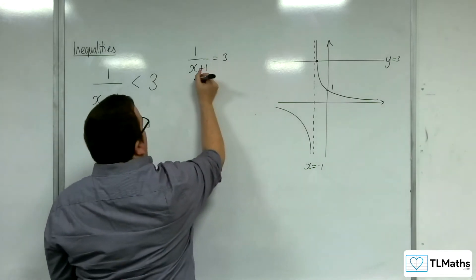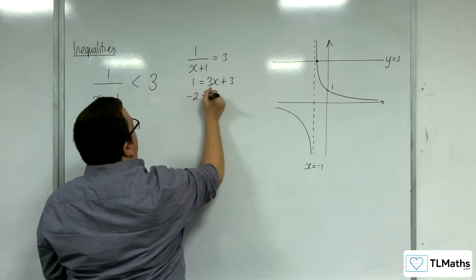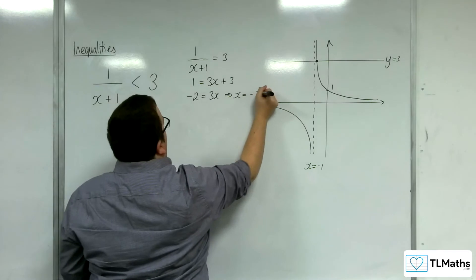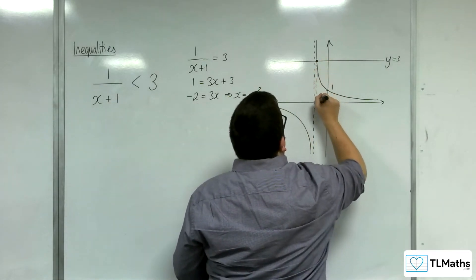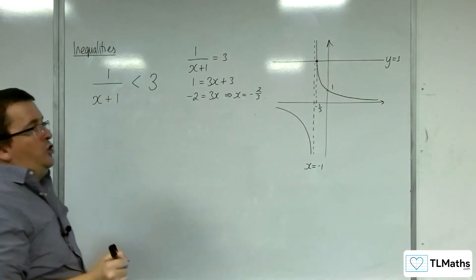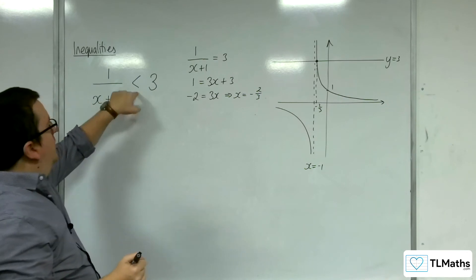I multiply it by the x plus 1, take 3 from both sides. And so, x is minus 2 thirds. So, I know that this point is minus 2 thirds. Now, what is the question asking me? Where is this graph below 3?